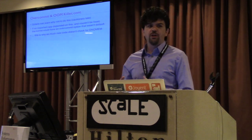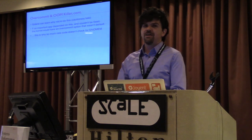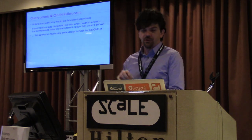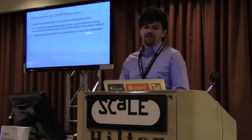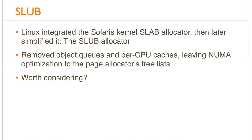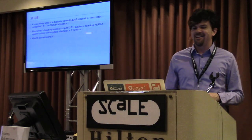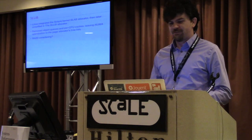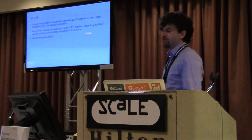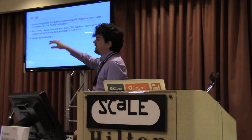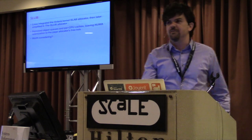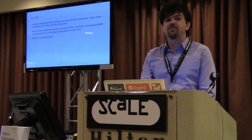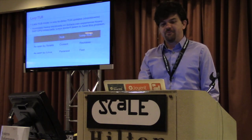Overcommit is also why so much new Linux code doesn't check for ENOMEM — because the kernel doesn't return ENOMEM on Linux by default. Developers could have written meaningful code paths for running out of memory, but they didn't bother checking. If you turn overcommit off, applications can write more meaningful code paths so the application performs correctly instead of just getting killed. Slab is another thing Solaris can learn from Linux — Solaris created the kernel slab allocator, it was integrated into Linux and became the default, then Linux simplified it with the SLUB allocator, which removed object queues and per-CPU caches, leaving optimization to the page allocator free lists.